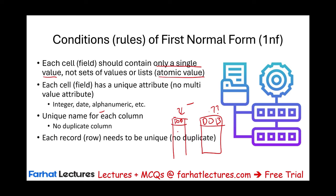Also, each record — each row — needs to be unique, no duplicates. Each row in the database should be unique, different from the other one. You should not have any duplicate rows. So those are what we call first NF, or first normal form, or 1NF. The best way to illustrate this is to look at an actual database, look at some violations, and see how we would resolve those violations in order to meet the first normal form in database normalization.